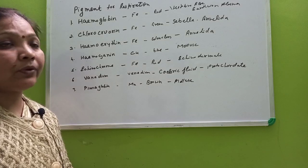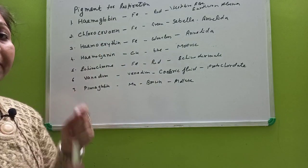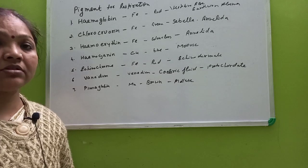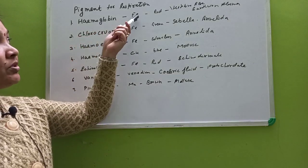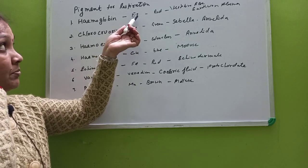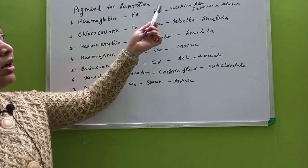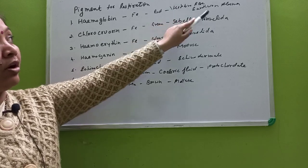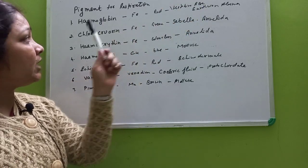Now children, next we have to study the pigments of respiration. There are many pigments involved in the process of respiration in different organisms. The first pigment is hemoglobin, which contains the metal iron. It is red in color and is found in the RBCs of vertebrates, and also dissolved in the plasma of earthworms.